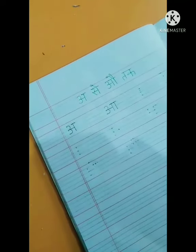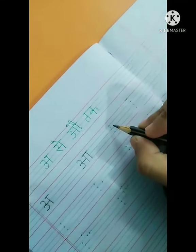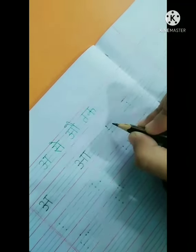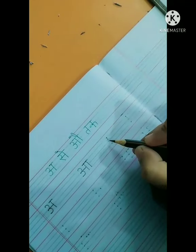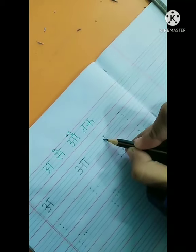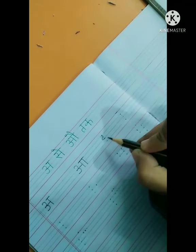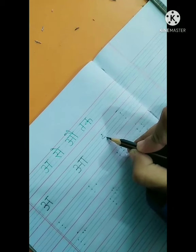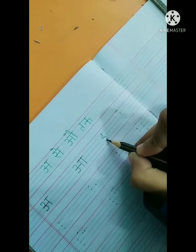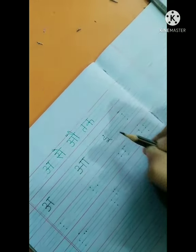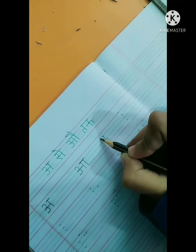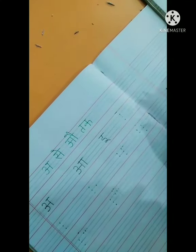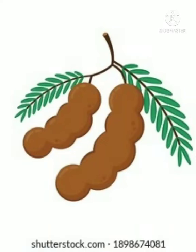Now we will make chhoti e. Make a standing line from the first dot to the second dot, then a right curve from the second dot to the third dot, and a left curve from the third dot to the fourth dot. Now make a small circle in each, then a slanting line, and make a sleeping line on the top. This is chhoti e — chhoti e se imli.